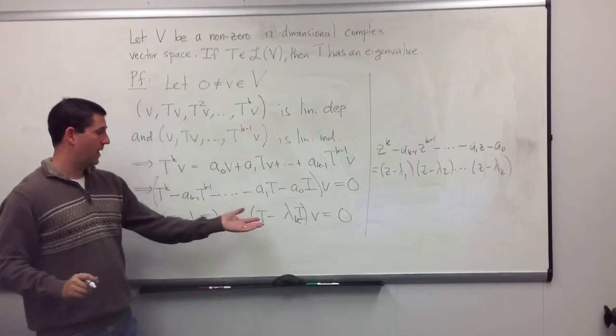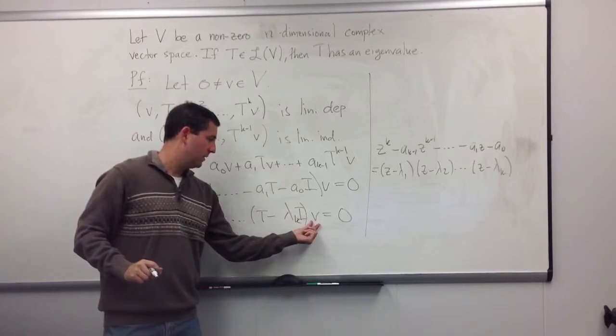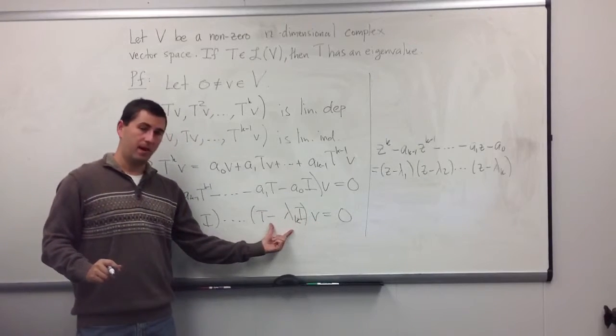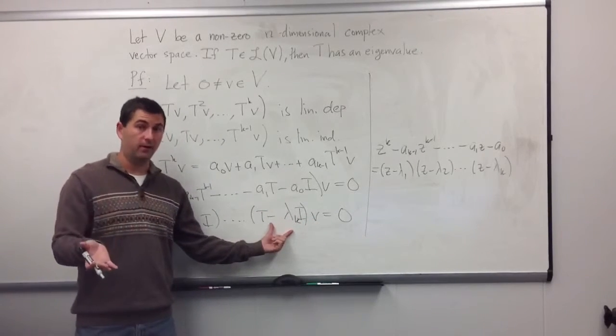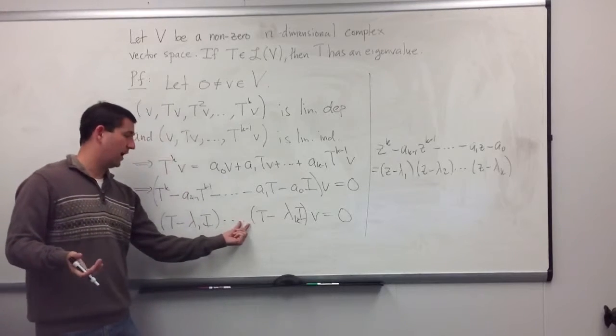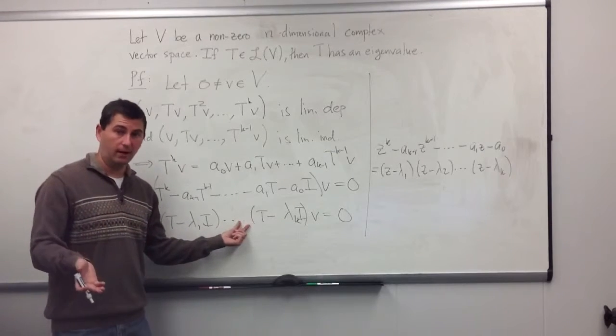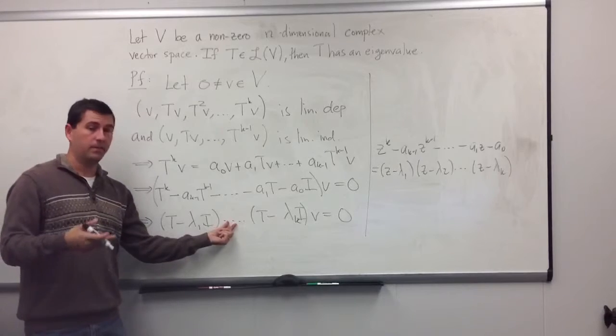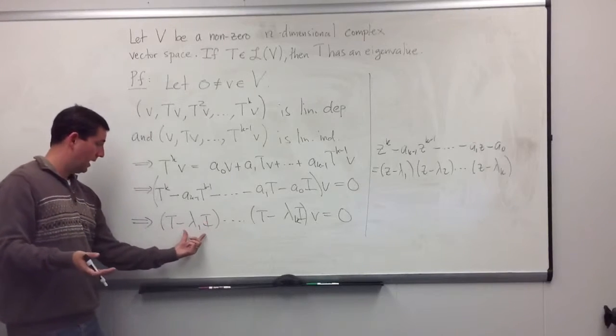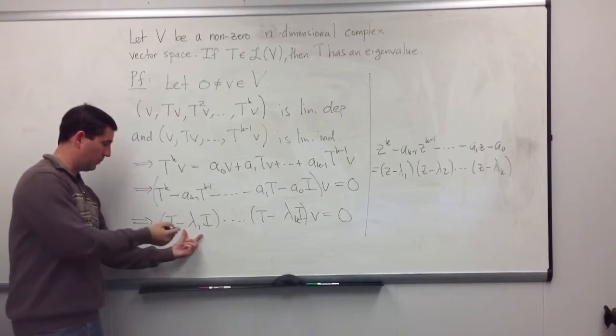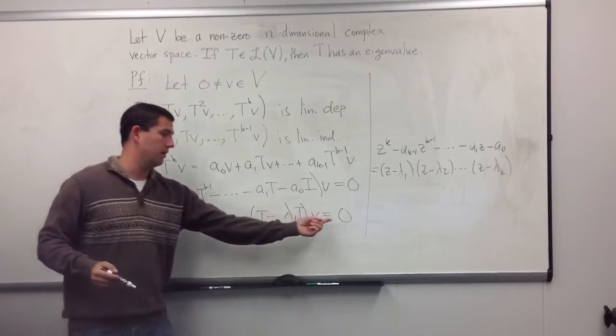So, I take this element v, and I put it into the first map. It spits out another vector. I put it into the second map. It spits out another vector. I put it into the third map. It spits out another vector. I keep doing this. And when I get out to the end, I put it into the last map, and 0 comes out.